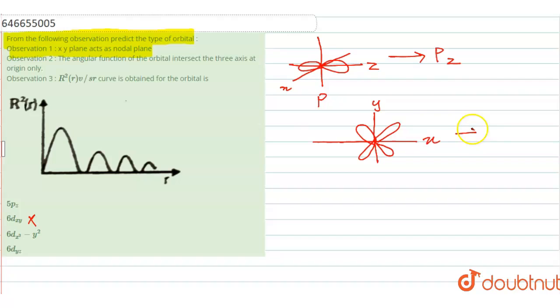For 6d x² - y², it will also be same because the xy plane will not act as the nodal plane, so this will also be incorrect.